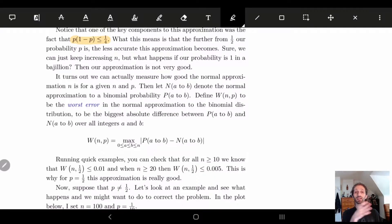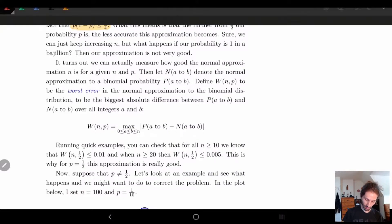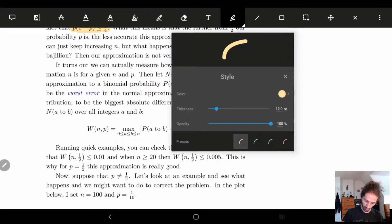It's not going to be a very good approximation if our probability is one in a bajillion. But it turns out we can actually measure how good the normal approximation is for some given n and p.